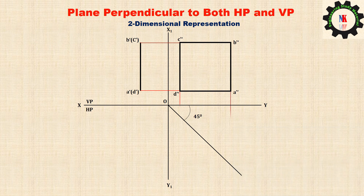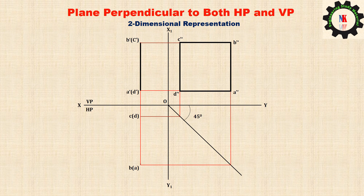To obtain the top view, draw the vertical projectors from the side view to intersect with the mitre line. From the point of intersection, draw the horizontal projectors. Now draw the vertical projector from the front view and obtain the corners. Join the corners to obtain the top view. The front view is represented on the vertical plane and top view on the horizontal plane. We can see here both front and top views are represented by a straight line.